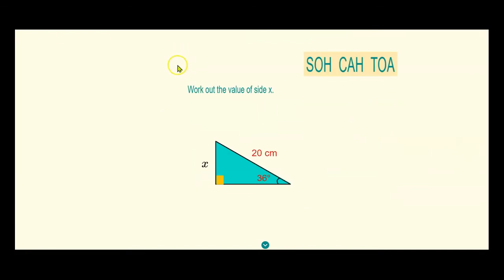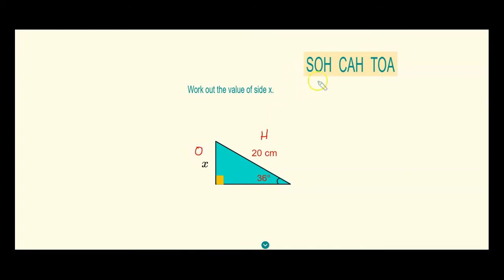Now let's have a go at the first question. We're going to work out the value of side x. We're going to identify what sides are given and what are unknown. We have 20 centimeters given — that's the side opposite the 90 degrees, which is the hypotenuse. And x is the side opposite 36 degrees, so that's our opposite side. The function that uses opposite and hypotenuse is sine.